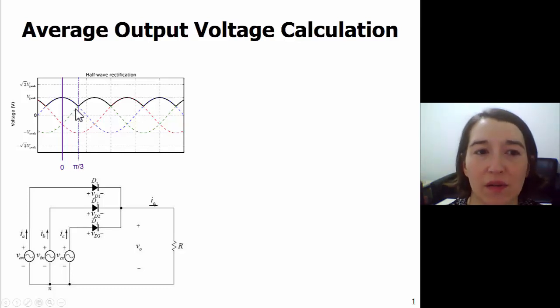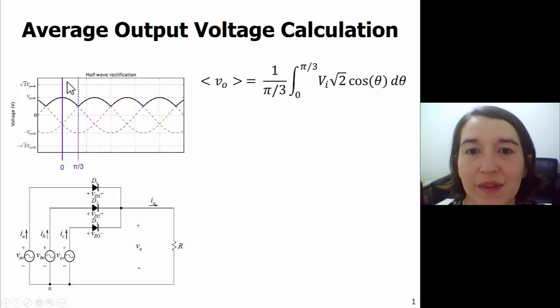We just have to integrate from zero to pi over three and use a cosine at the correct amplitude, and we can solve for the average value. So let's set up that equation. The average output voltage is one over t and we're going from zero to pi over three.